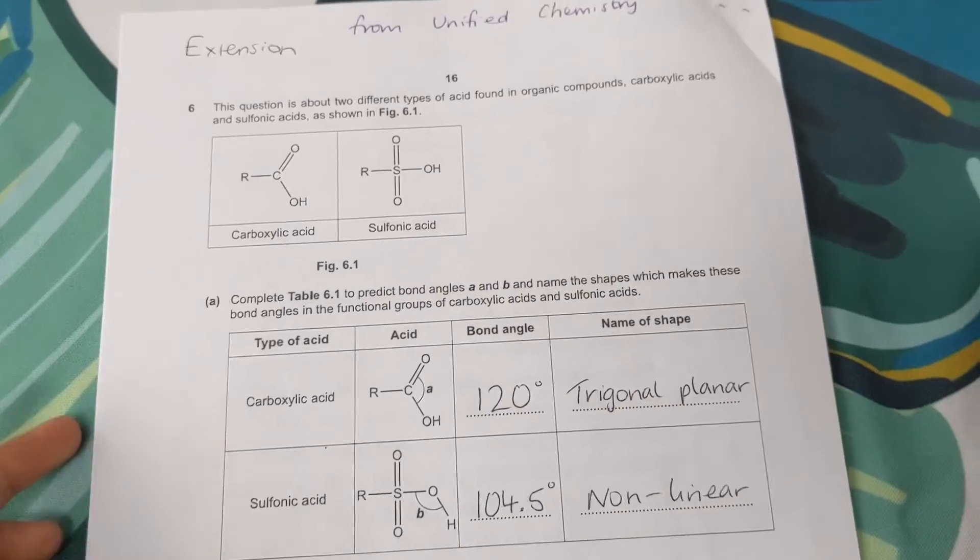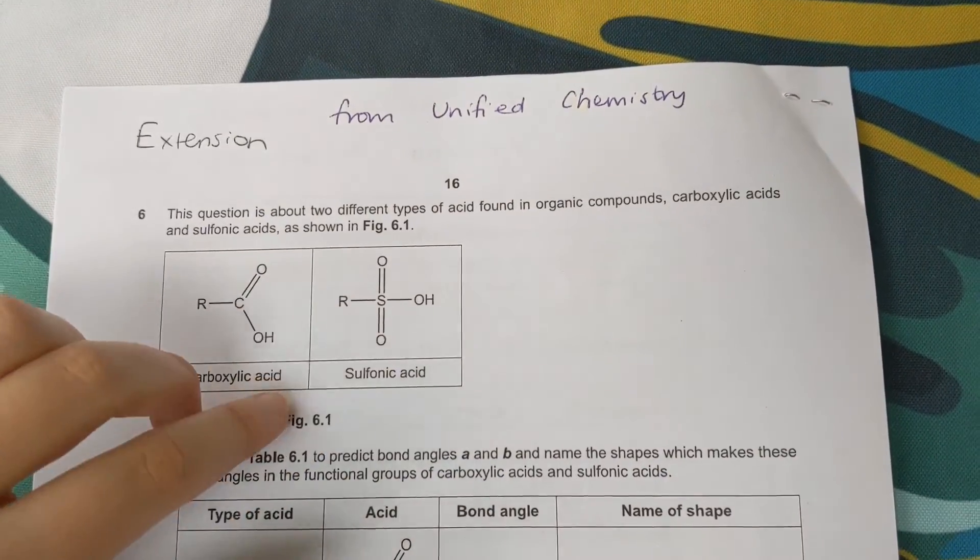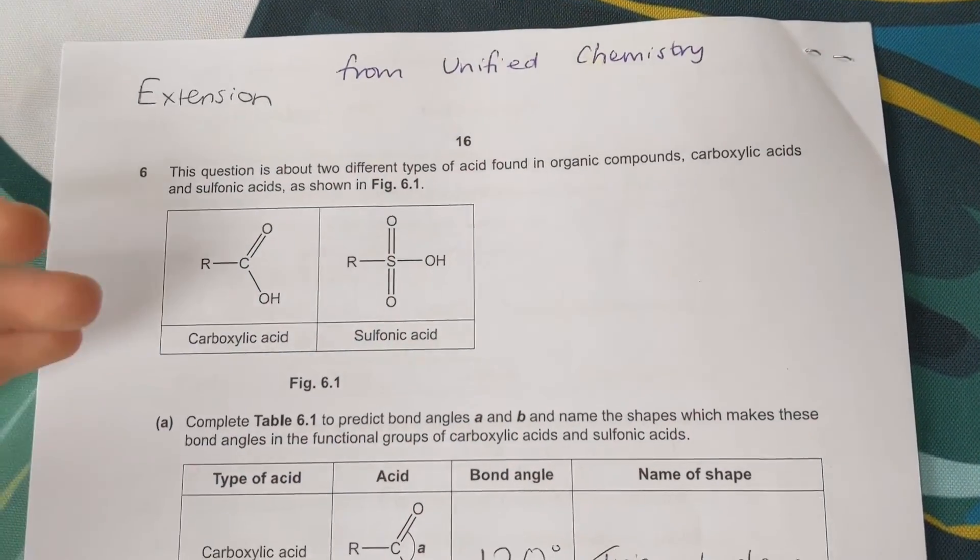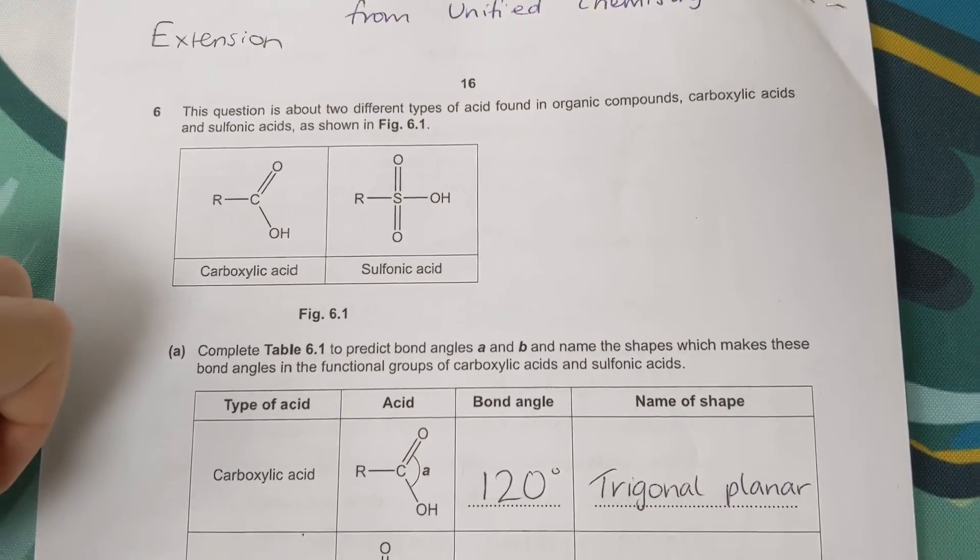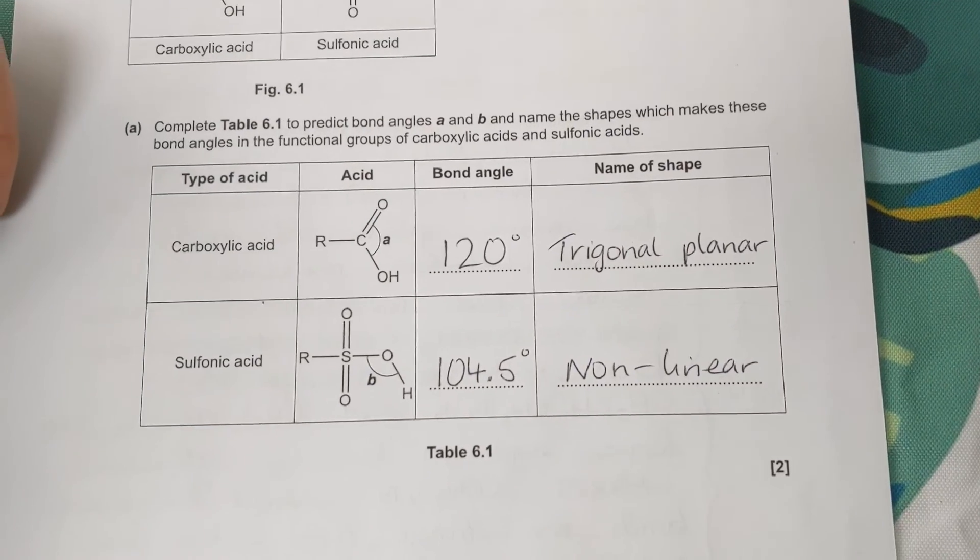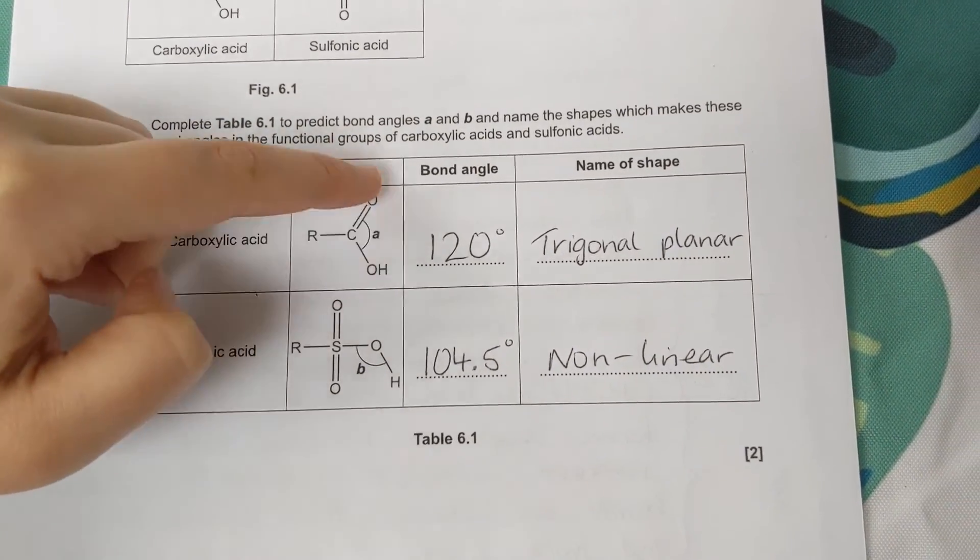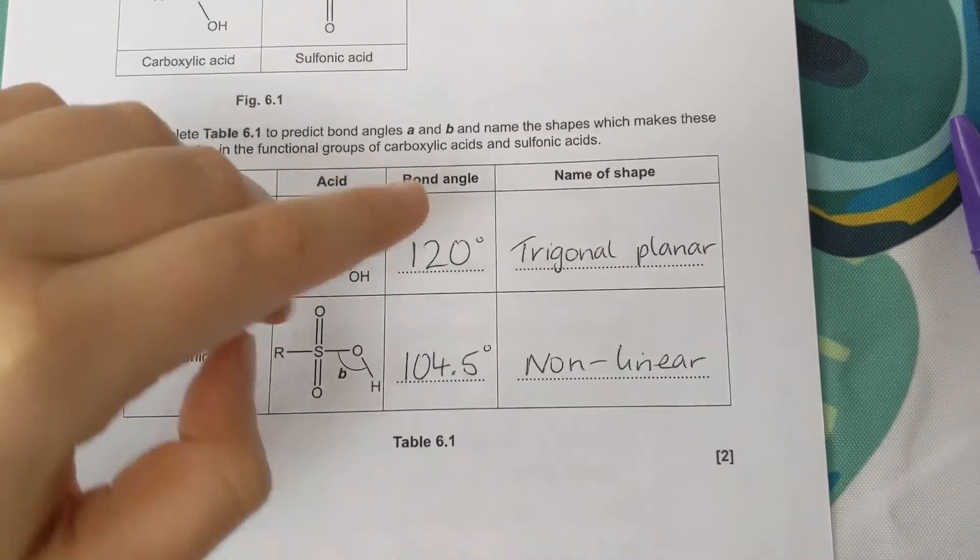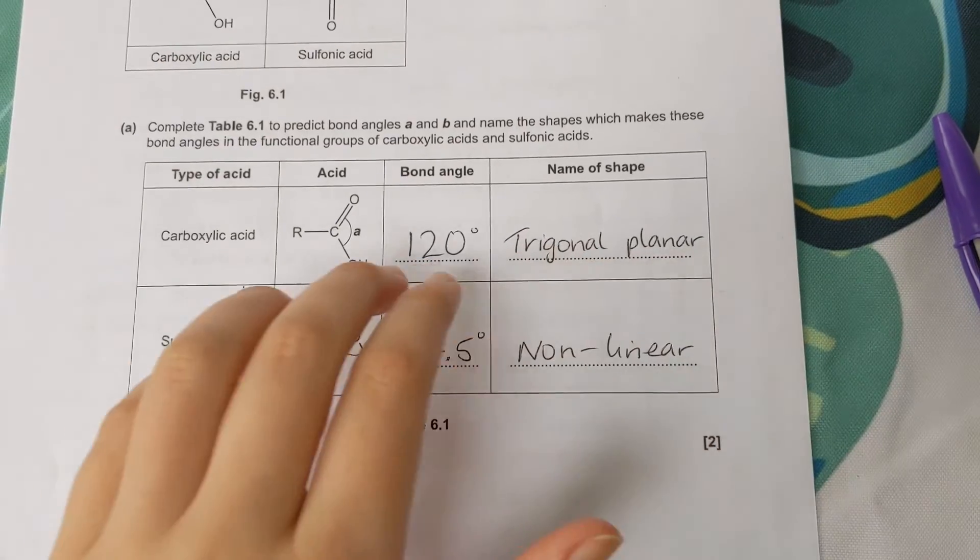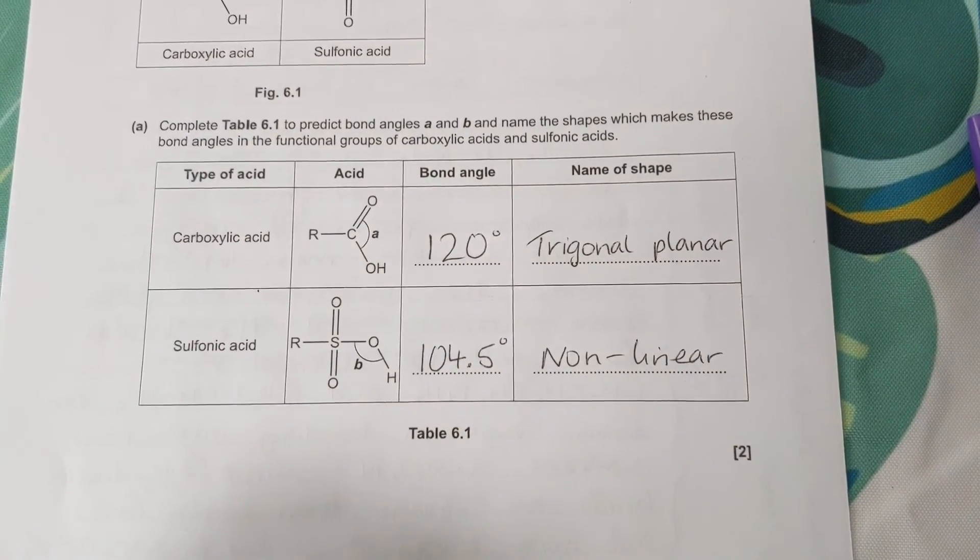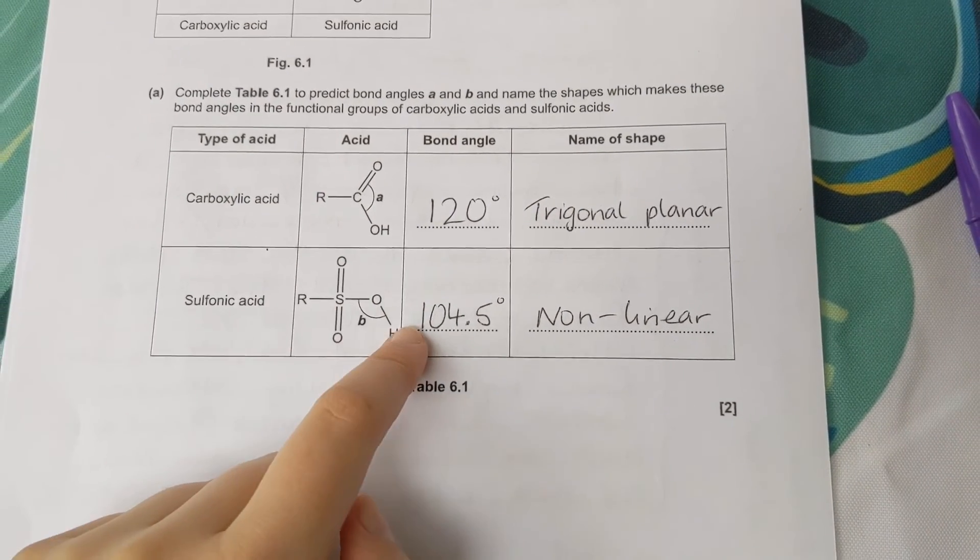Last question is about shapes of molecules. So these molecules might be unfamiliar to AS, but we're applying AS knowledge to work out the shapes and the angles. So we have a carboxylic acid and it's asking us, we've got three bonding regions. We can see they're equally spaced. So the bond angle is going to be 120 and trigonal planar—three bonding regions and no lone pairs. This one is asking about the bond angle around the oxygen. We can see that's non-linear, just like water. So the angle is going to be 104.5 or it allows 105 and it's non-linear.